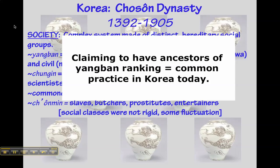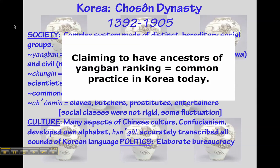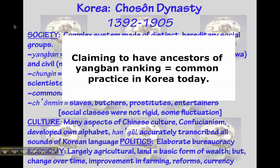Korea was also known for having a unique culture, which was certainly influenced by China, but had its own language and writing, an elaborate political system, and a fairly sophisticated economy, which was based on farming but had adapted over time to adopt agricultural changes. And even though wealth was based on land, Korea had its own currency.